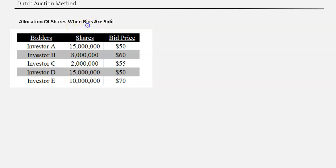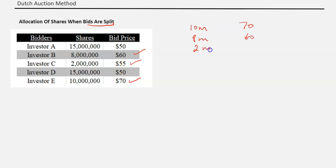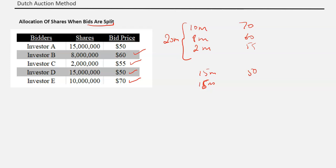Now let's discuss allocation of shares when bids are split. For example, in the same scenario you need 25 million shares. The highest bid is 10 million, the second highest is 8 million, and the third bid is 2 million at 55 — so 20 million has been fulfilled so far. For the remaining 5 million, the next bid is at 50, where there are two bidders, each at 15 million. What do you do? There are two methods, depending on market practice in your country.